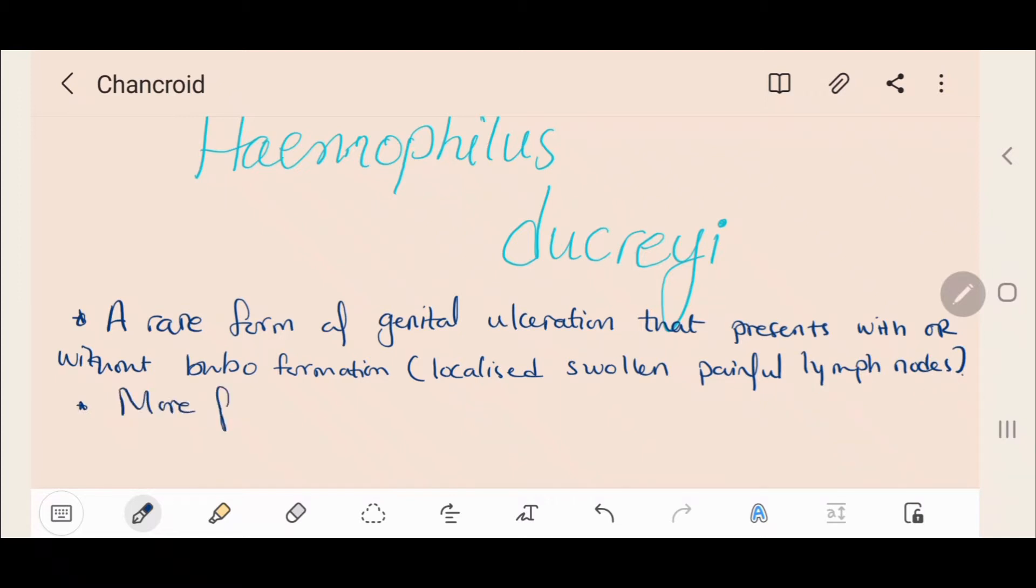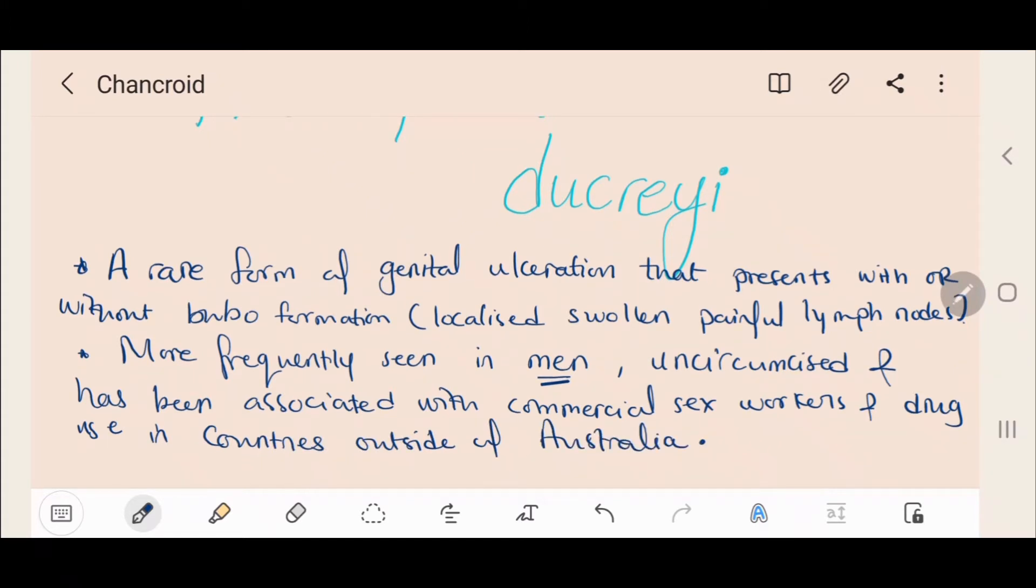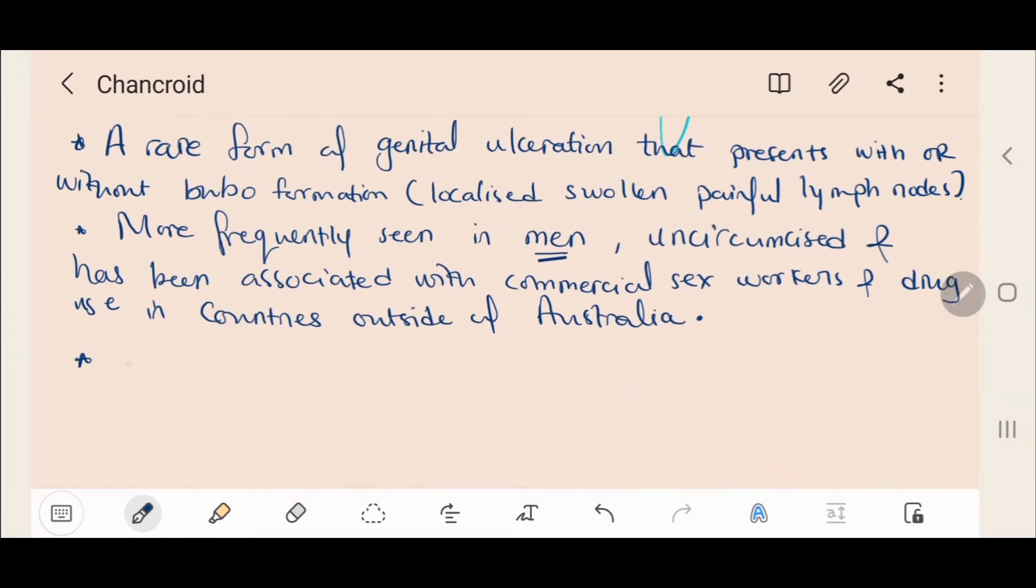The infection is more frequently seen in men than in women, in uncircumcised versus circumcised men, and has been associated with commercial sex workers and drug use in countries outside of Australia. Almost all cases are symptomatic and asymptomatic carriers are thought to be rare.